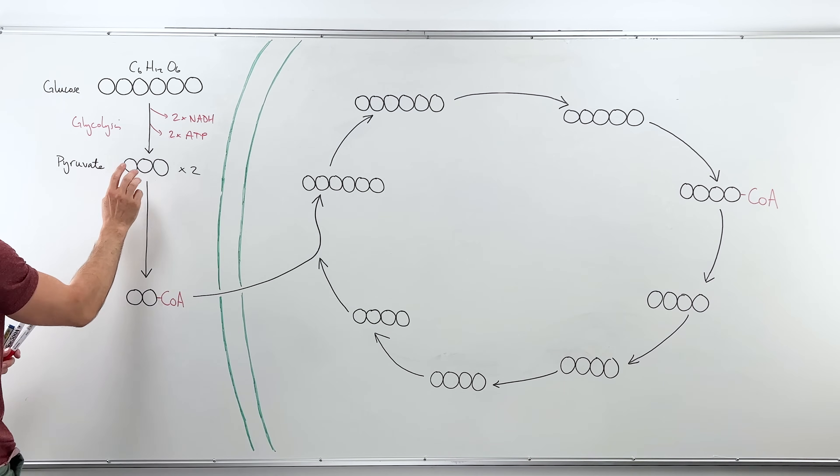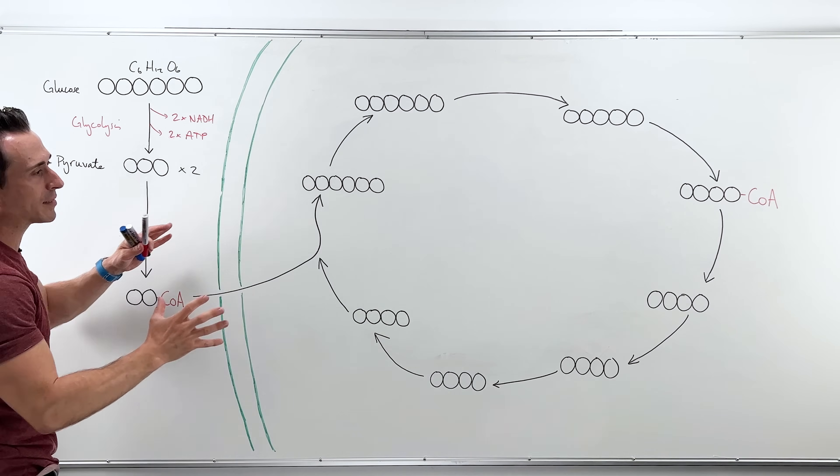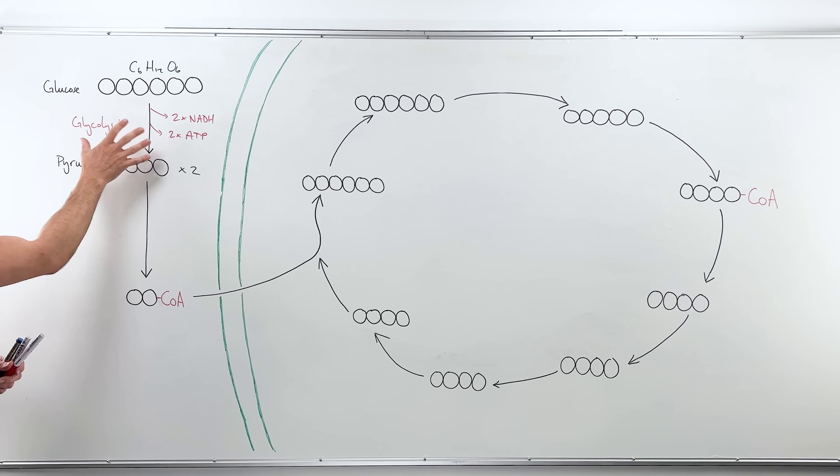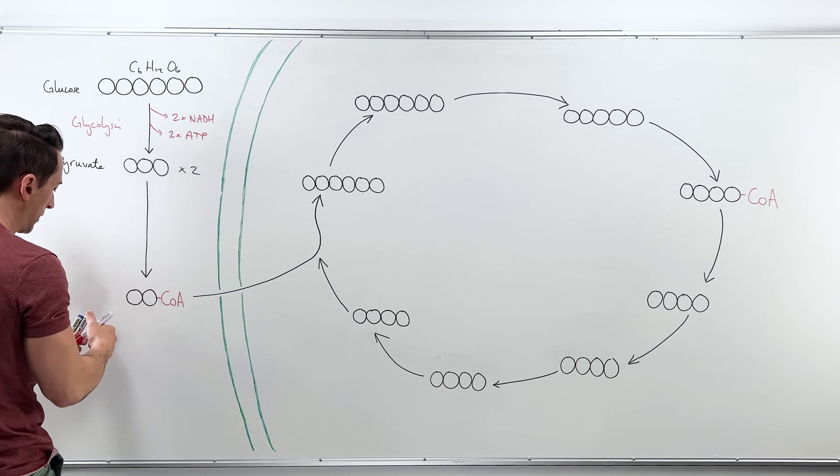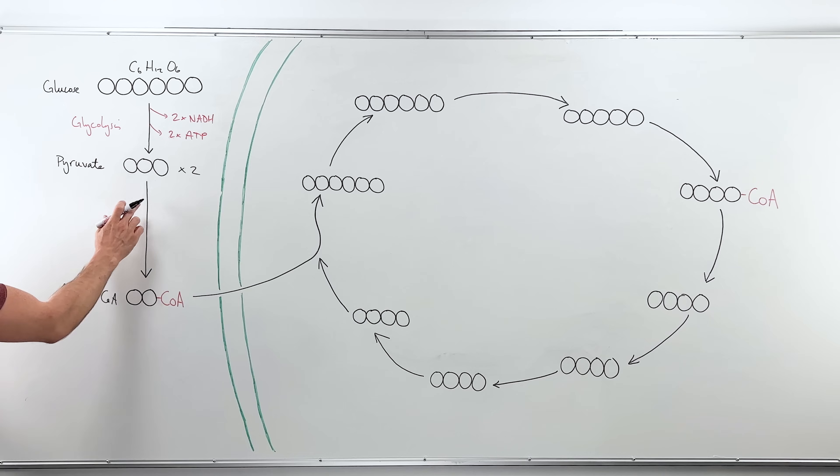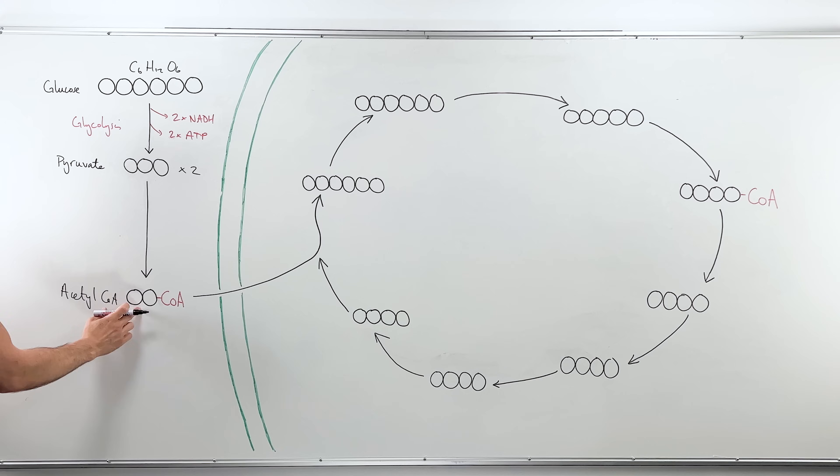Now we've created a three carbon molecule called pyruvate. In actual fact we've created two of them from one glucose molecule and this pyruvate wants to enter the mitochondria so it can enter the Krebs cycle. The mitochondria has an inner and outer membrane, it can't get through, it needs to be transformed into something that can. This is the product here, it's called acetyl-CoA. As you can see it goes from being a three carbon molecule to a two carbon molecule, so it needs to lose a carbon. Second thing is it needs to add a CoA as well.